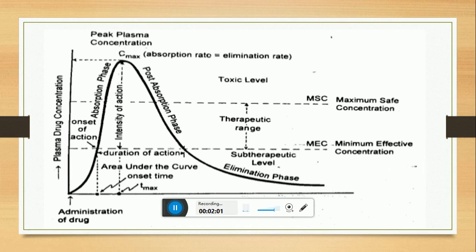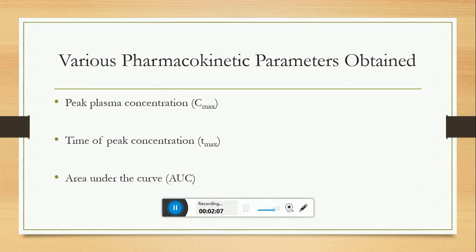I think you must have written the answer in your copy. The various pharmacokinetic parameters obtained are peak plasma concentration, time of peak concentration, and area under the curve.